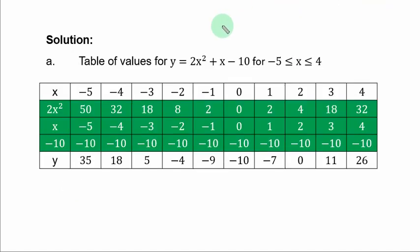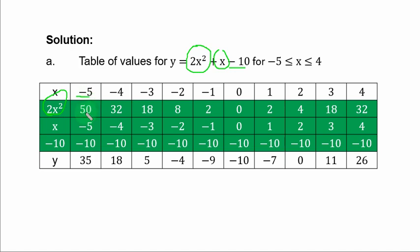Solution Part A. Complete the table of values. The x-values run from -5 to 4. For 2x²: when x = -5, 2×25 = 50; when x = -3, 2×9 = 18; when x = 2, 2×4 = 8. Adding x and -10 (constant): when x = -5, y = 50 - 5 - 10 = 35; when x = -4, y = 32 - 4 - 10 = 18; when x = -3, y = 18 - 3 - 10 = 5.